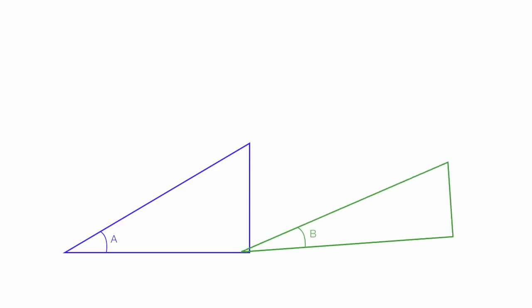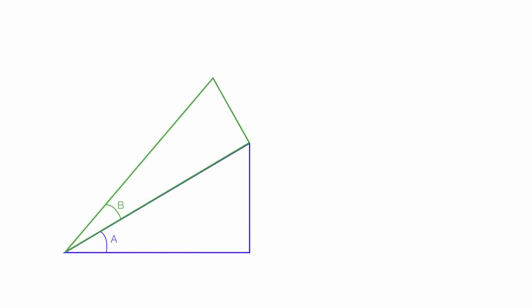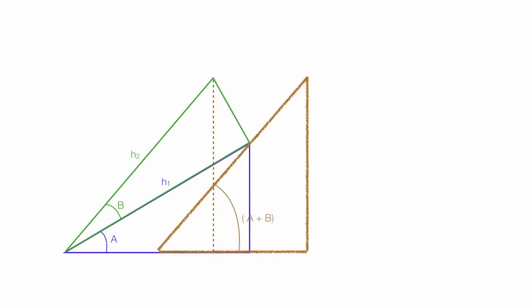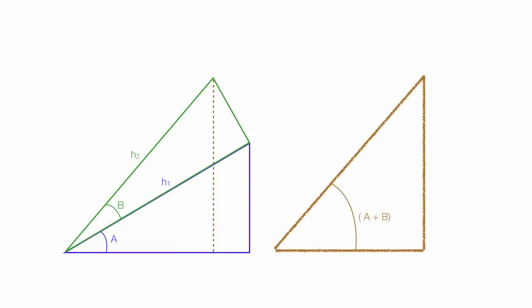So let me rotate the green triangle and put it on top of the blue one like that. The lengths of the hypotenuses are still the same — that's h2 and h1. I'll make a triangle with the angle a plus b — a brown triangle. Slide that to the right so you can see it a little easier. The length of the hypotenuse is h2, so the opposite side is h2 times sine of a plus b.